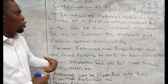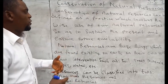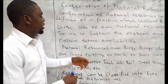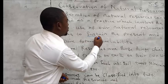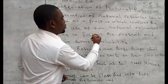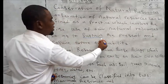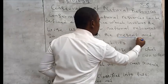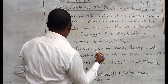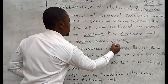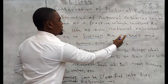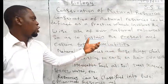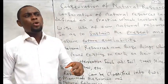So we call it a practice — it is something you do consciously to preserve them. Natural resources must be used wisely so as to sustain the present. Why do we talk about sustaining the present and ensuring future availability? These are important reasons why we should conserve.